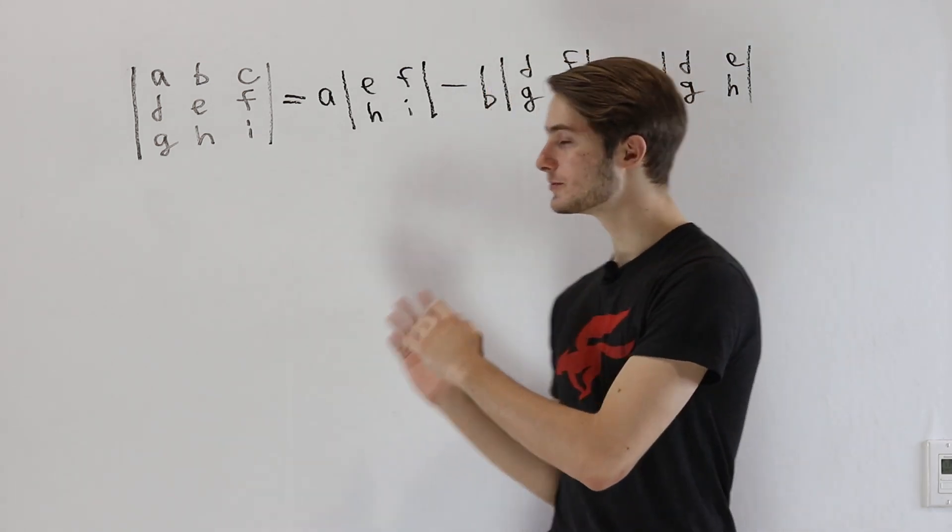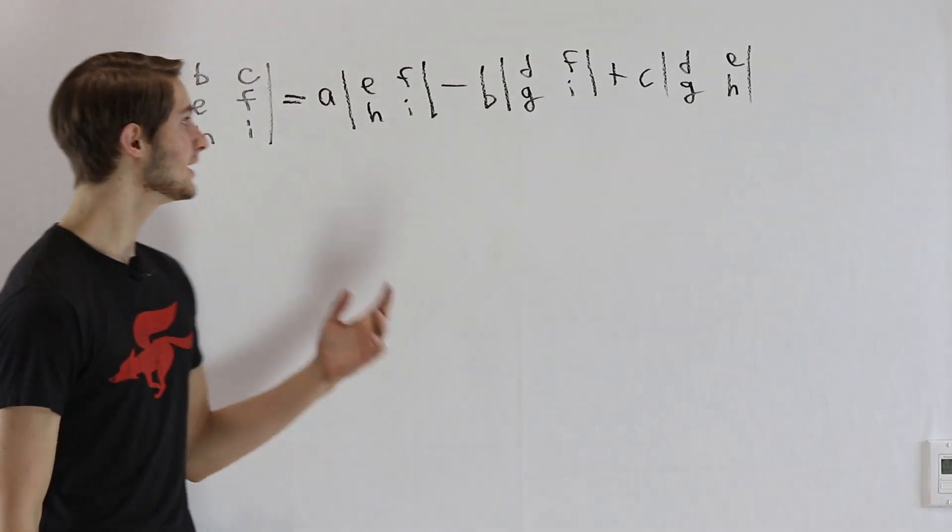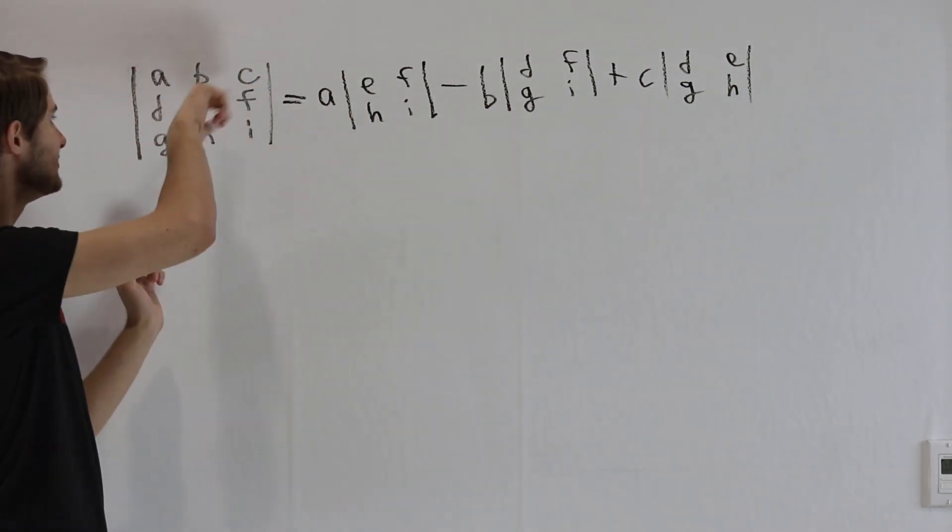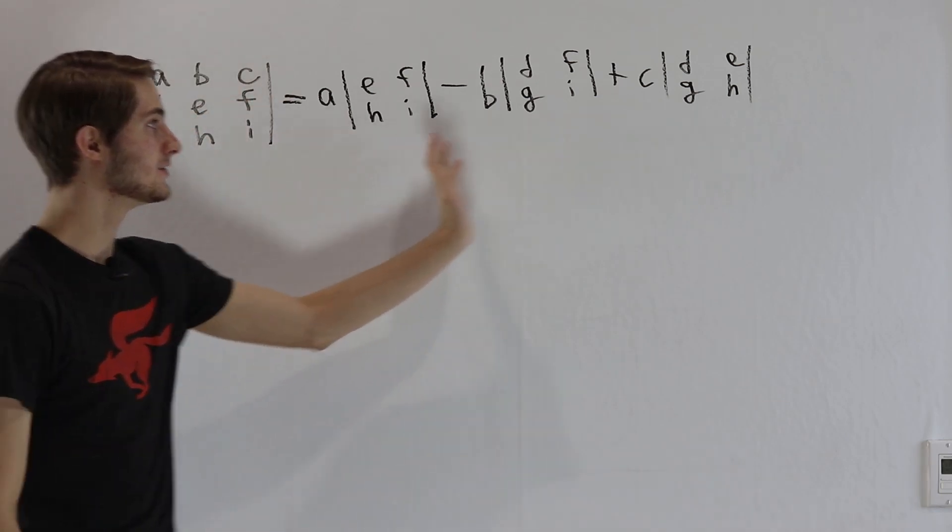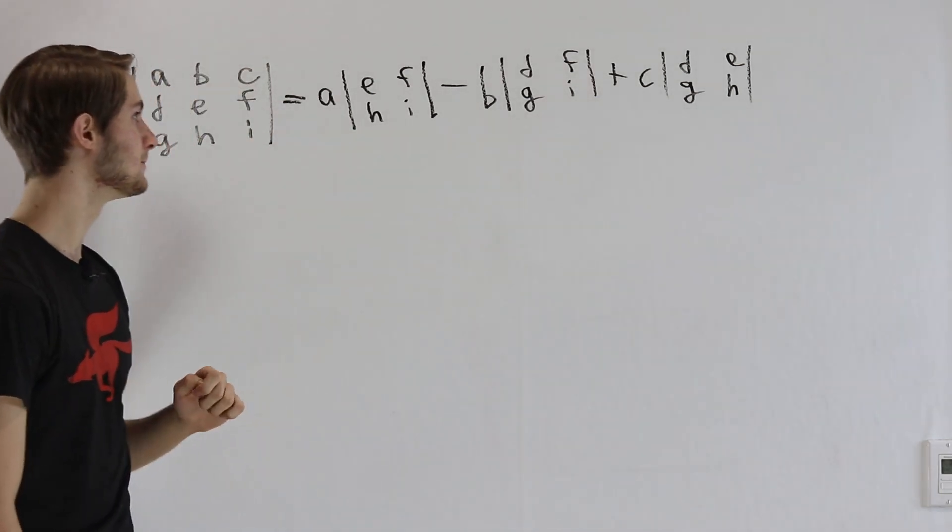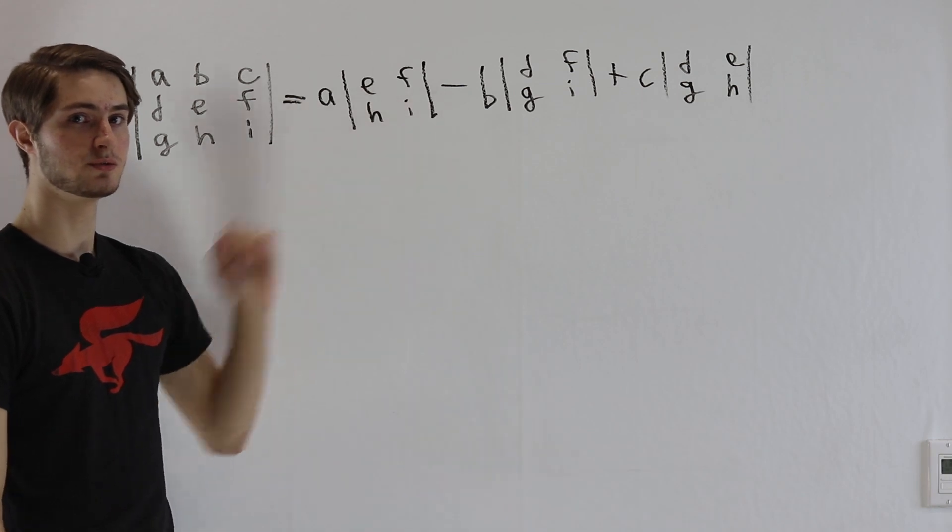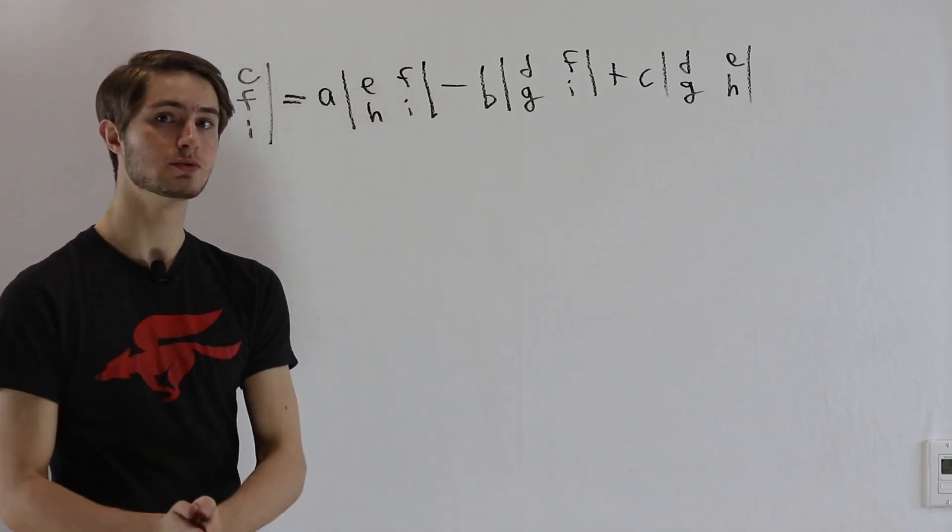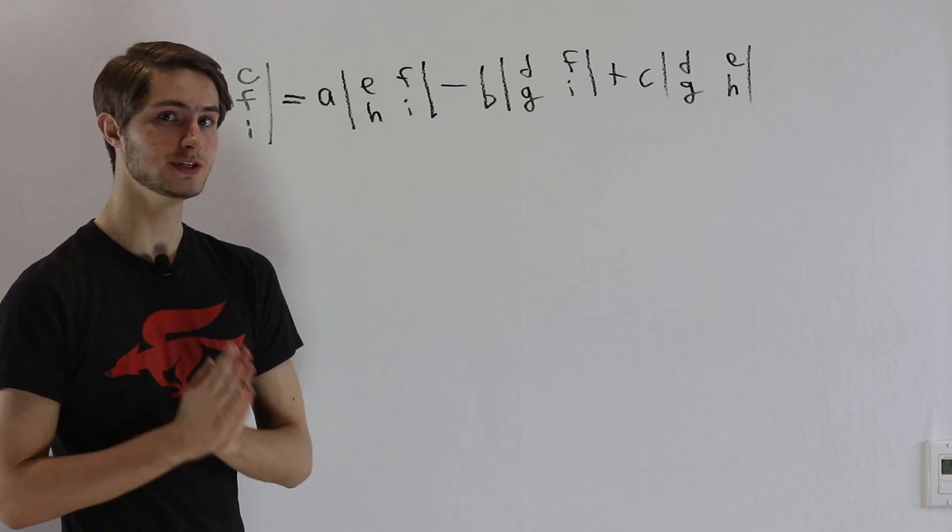Now I've written out the formula for the determinant of a 3 by 3 matrix on the board here. The determinant of ABCDEFGHI is this formula right here, and we're going to try to parse what is going on. We want to do this in the context of what we already learned about 2D determinants.